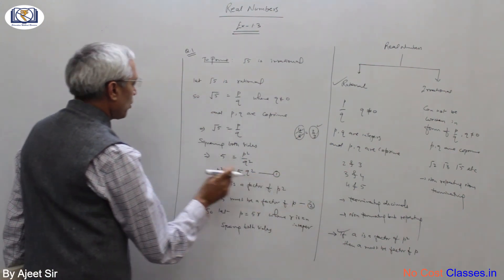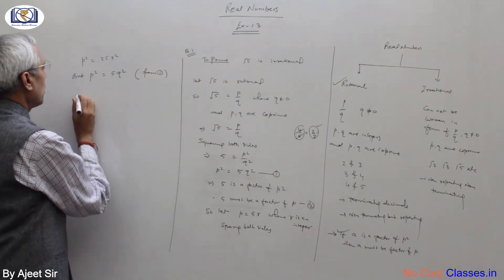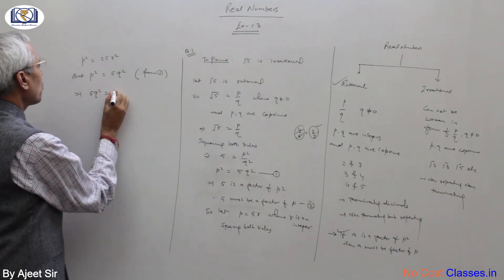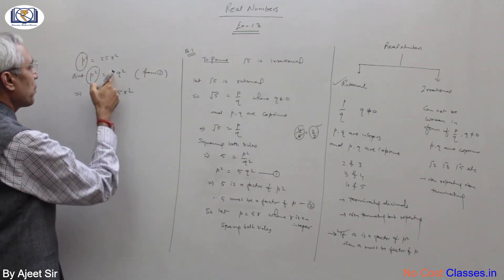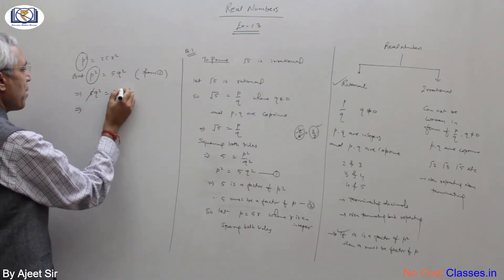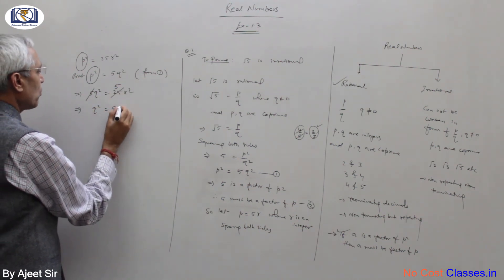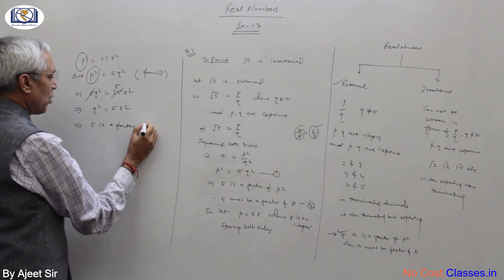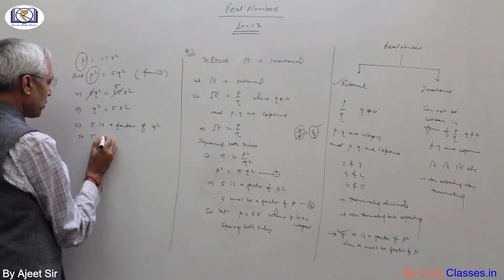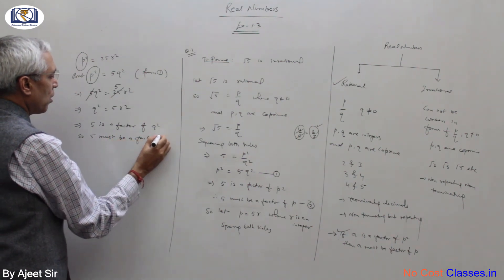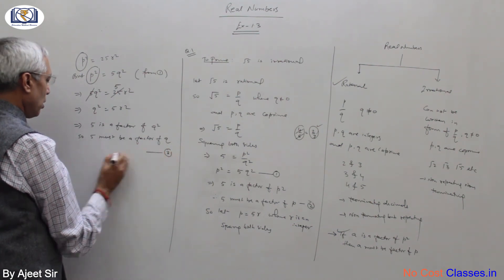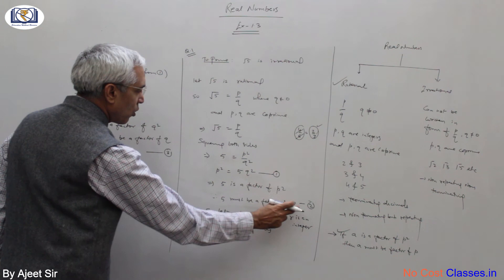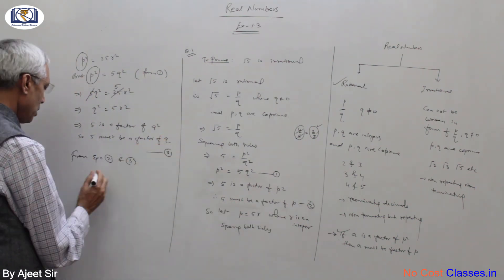From equation number one, substituting: 5q squared equals 25r squared. Simplifying, q squared equals 5r squared. This implies 5 is a factor of q squared, and therefore 5 must be a factor of q.